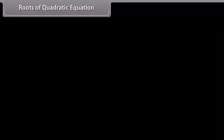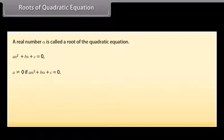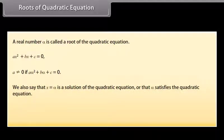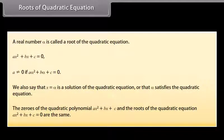A real number alpha is called a root of the quadratic equation ax² + bx + c = 0, where a ≠ 0, if aα² + bα + c = 0. We also say that x = alpha is a solution of the quadratic equation, or that alpha satisfies the quadratic equation. The zeros of the quadratic polynomial ax² + bx + c and the roots of the quadratic equation ax² + bx + c = 0 are the same.